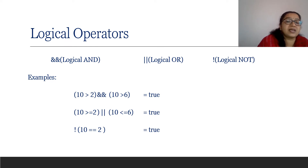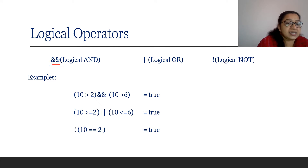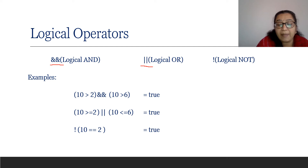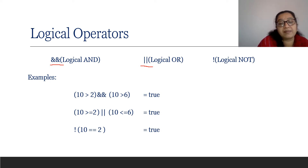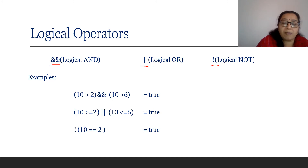For the logical AND operator we use two ampersand signs. For OR, we use two pipe symbols — the pipe key is just above the Enter key on the keyboard. For NOT, we use one exclamation mark. So these are the logical operators.